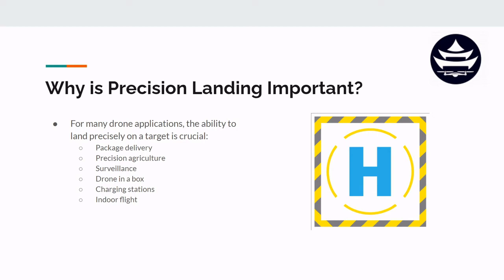So why is precision landing important? What might be some of those drone applications that require precision landing? Well, there are a lot of things like maybe package delivery — maybe an Amazon consumer of the future has a little target in their backyard that the drone delivering a package must identify and land on. Maybe precision agriculture — maybe there's a crop-spraying drone that needs to land in a very precise location so that it can autonomously refuel or refill its pesticide containers.